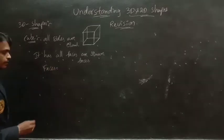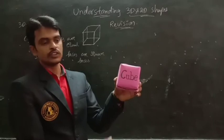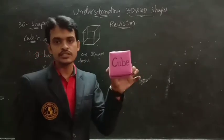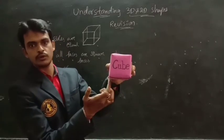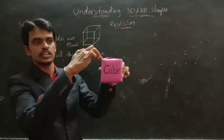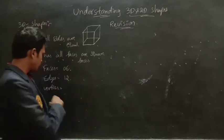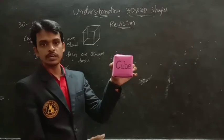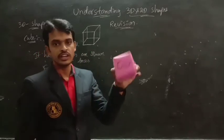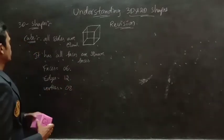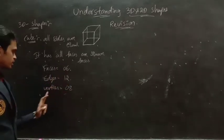Now we identify the faces, edges, and vertices of a cube. Counting the faces: 1, 2, 3, 4, 5, 6 — it has 6 faces. For edges: bottom 4, top 4, and lateral 4 — total 12 edges. For vertices: top 4 corners and bottom 4 corners — total 8 vertices. So a cube has 6 faces, 12 edges, and 8 vertices.